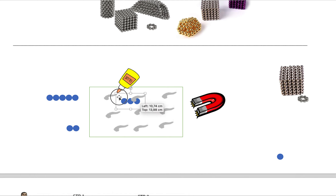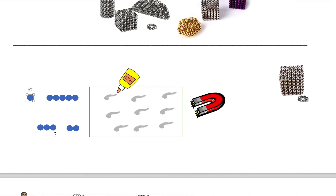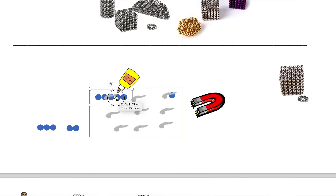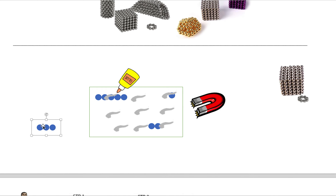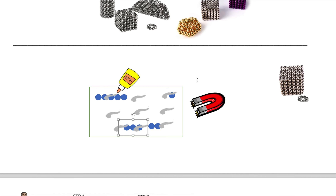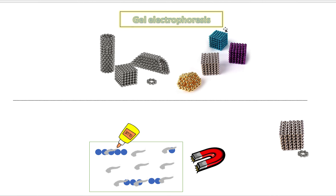Pretend we put a three-piece, a two-piece, a one-piece, and a five-piece magnet on the surface. The one-piece will travel the furthest, maybe stopping around here — because of the glue, they don't actually reach the far magnet. The five-piece will travel the least. The two-piece is slightly heavier than the one-piece so it won't go as far, and the three-piece is lighter than the five but heavier than the two, so it stops somewhere in between. If you understand this concept, gel electrophoresis will be really simple.